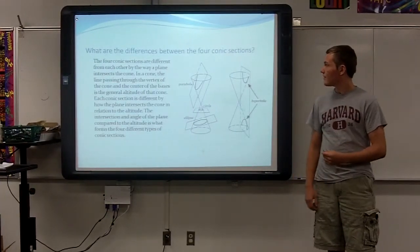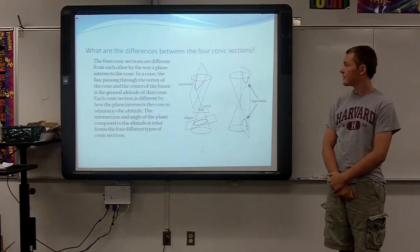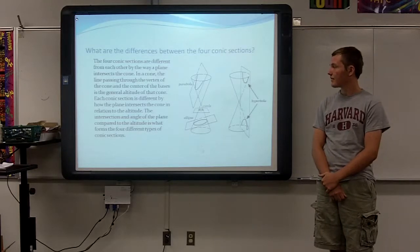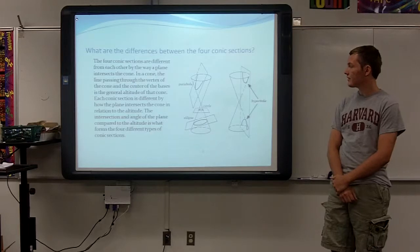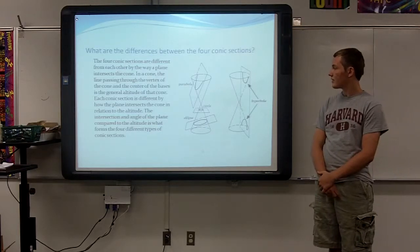What are the differences between the four conic sections? The four conic sections are different from each other by the way a plane intersects the cone. In a cone, the line passing through the vertex of the cone and the center of the bases is the general altitude of the cone.